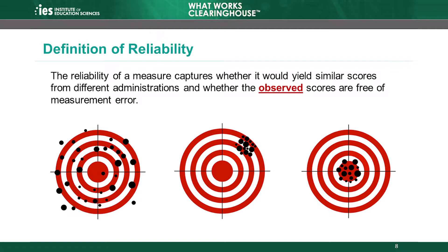For example, imagine that these target images represent the outcome measure of interest. The center of the target represents the concepts that the outcome measure claims to measure. An outcome measure with reliability produces measurements that hit the target consistently in the same general area. Two of these images represent an outcome measure with reliability. The first target represents a measure that is not reliable, because the results are scattered across the whole target. The results in the second target are clustered in a single area, so this measure is reliable. The results do not need to hit the center of the target to be considered reliable.